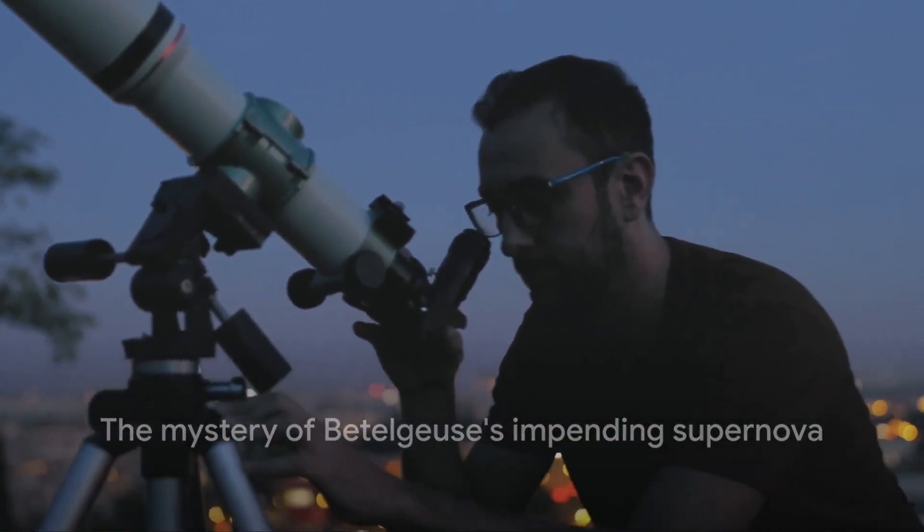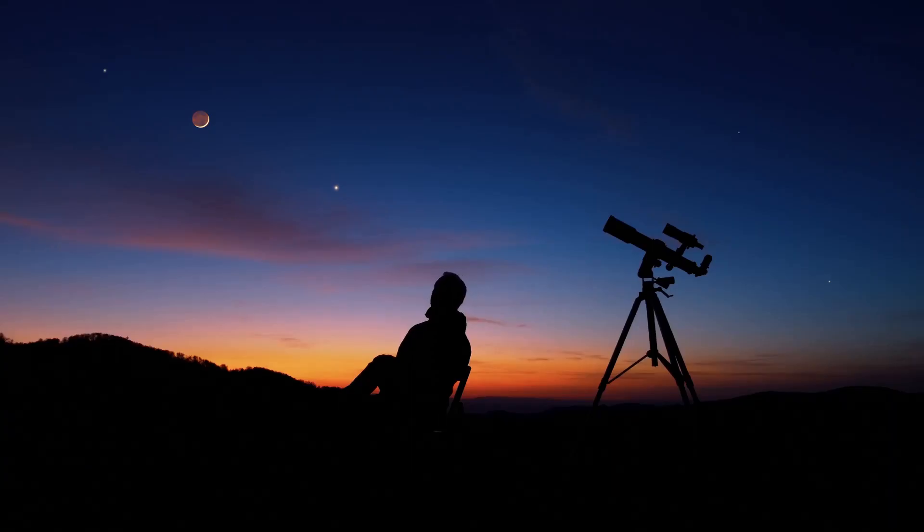While these signs point towards an impending supernova, the exact timeline remains a mystery. It could be tomorrow, it could be in a thousand years, or it might not happen at all. But say it happens tomorrow, what would that look like from Earth?